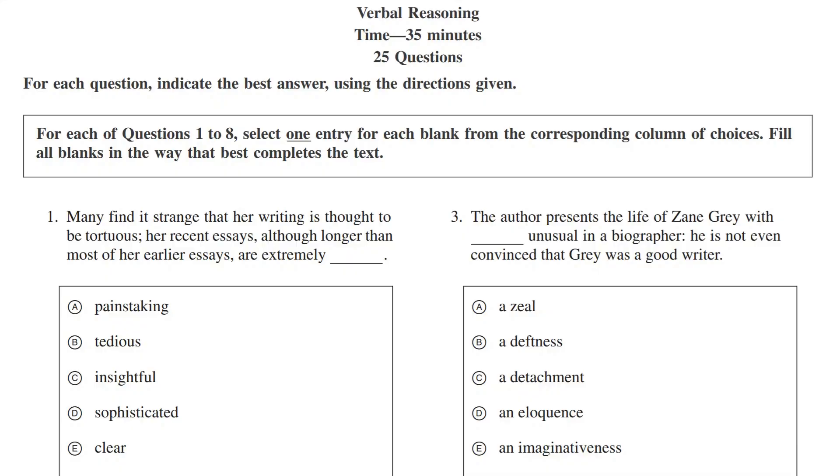I'm now going to answer every text completion and sentence equivalence question in this verbal reasoning section, and I'm going to give myself 18 minutes, which is about how much time I would have in the real exam. This timer can start now.